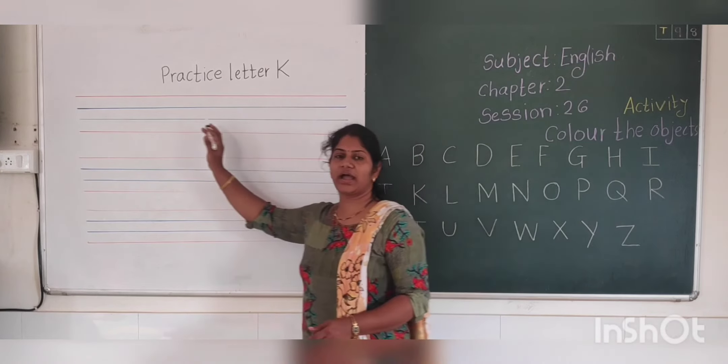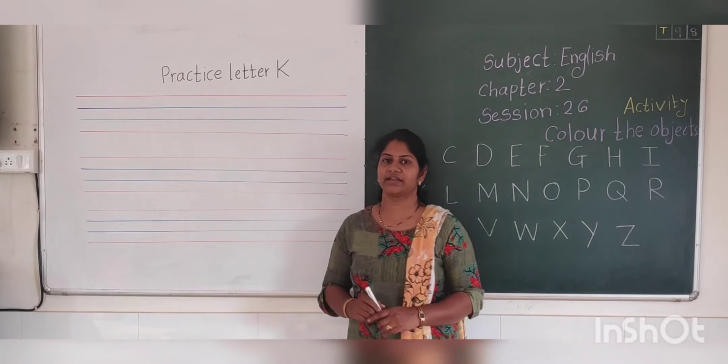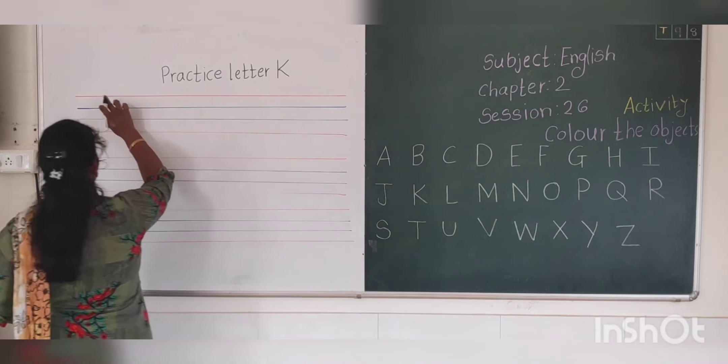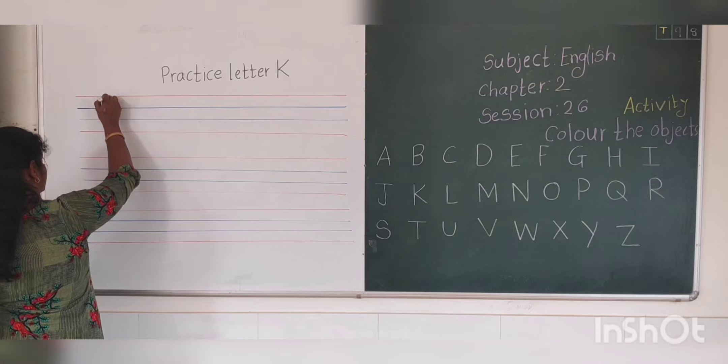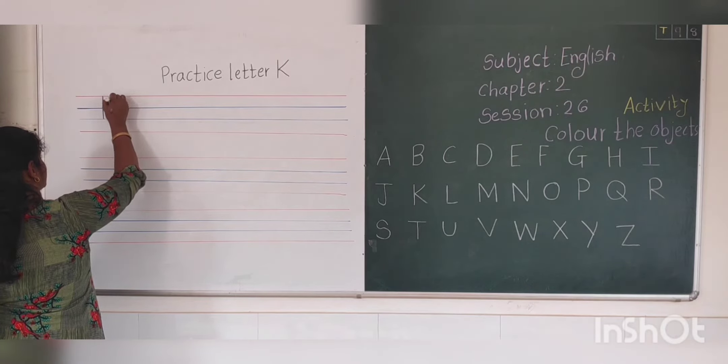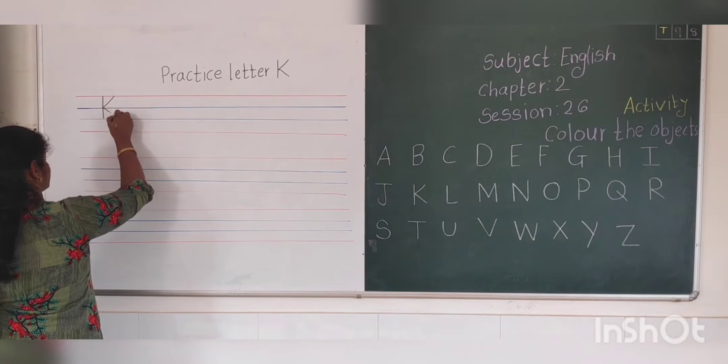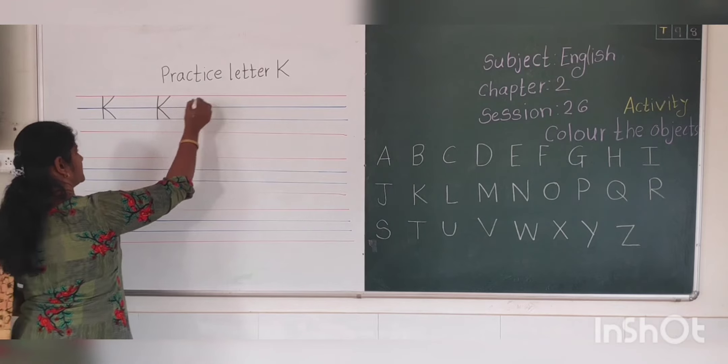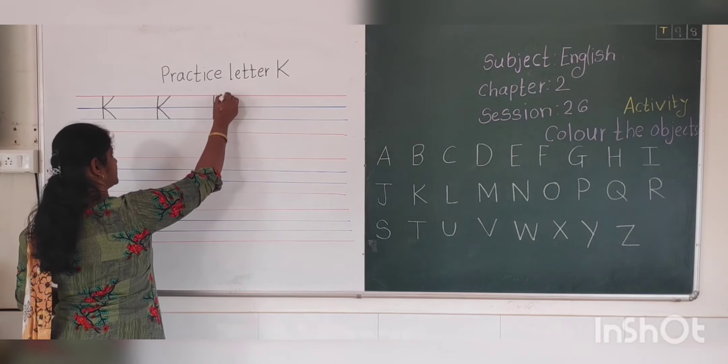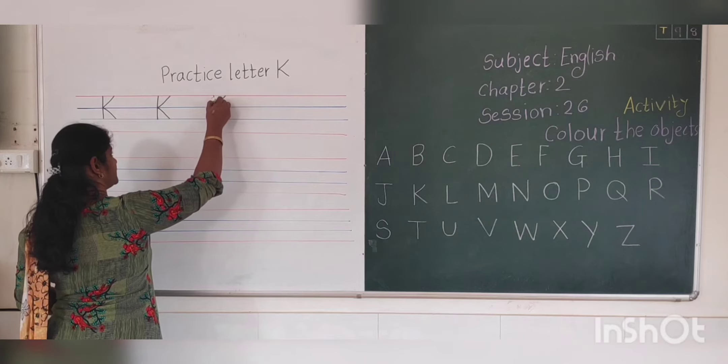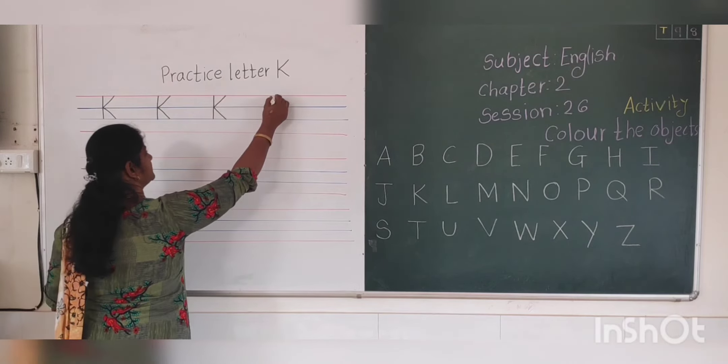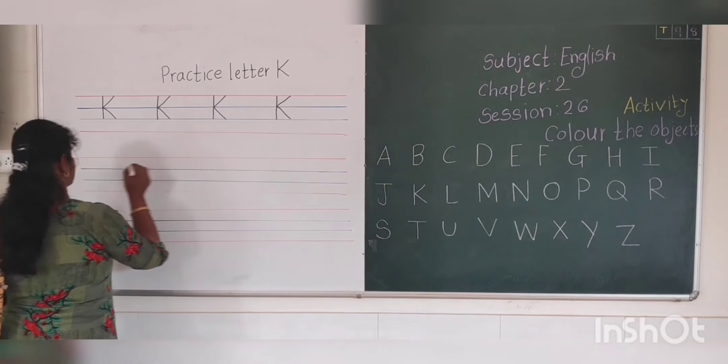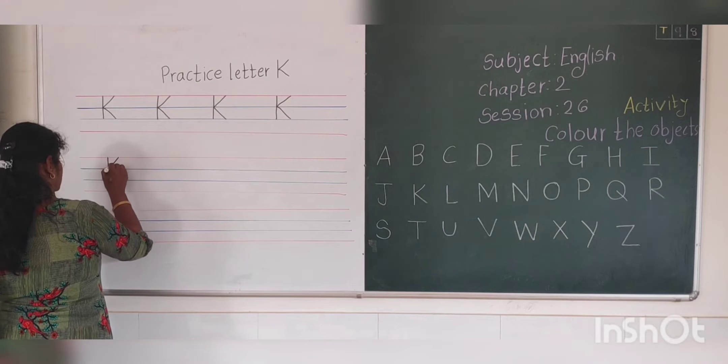Practice letter K. Now I am going to show you how to write letter K in this four line. You have to start from red line, standing line first, then standing line. This is K. First standing line, then sliding line from red line to blue line. Letter K. This is K, K for kite.